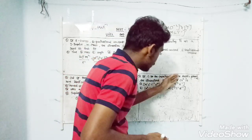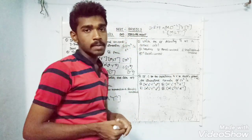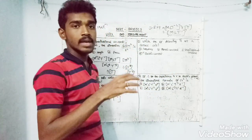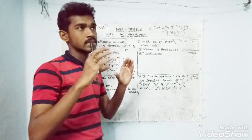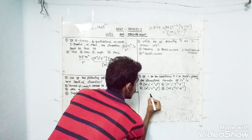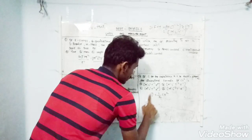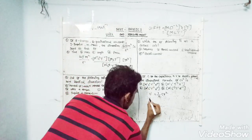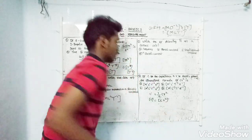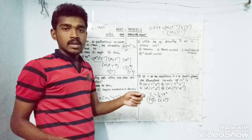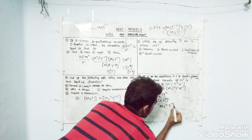If C is the capacitance and V is the electric potential, we look at the dimension of C·V². In electrostatics, the energy stored in a capacitor is U = ½·C·V². So dimensionally, U is equal to C·V². We use this formula to find the dimension of C·V², since U is energy — the capacitor stores energy.